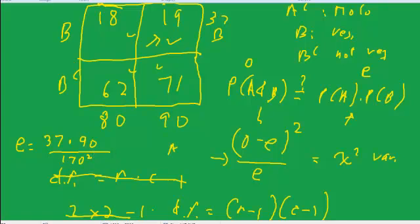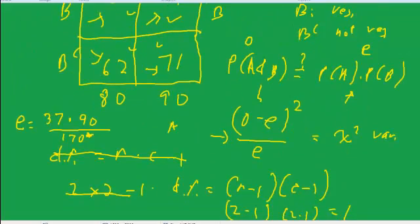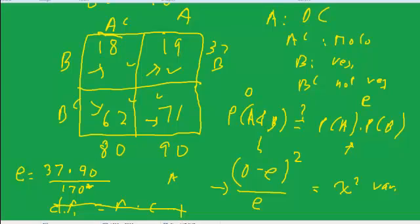Okay, that'll give me an expected count. And then I would take this 19, I would subtract whatever I got here, square it, and then divide by the expected count. That'll give me a chi-square. I do that here, and then I do that here, and then I do that here, and I do that here, and that gives me four of them. And I add them up, and I get a chi-square. Again, we're just going to do that in the calculator. So let me scroll up, remember my numbers. So these will be the numbers, the 18, 19, 62, and 71.